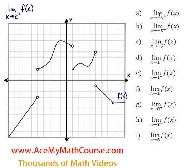If we're looking for the limit as x approaches negative 5 from the right of f — this is negative 5 right here — and as x approaches negative 5 from the right, the value is 2. So just positive 2 for y.